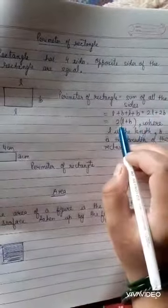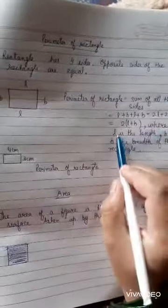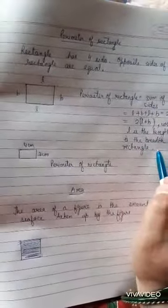So we will take 2 as a common. So 2(L plus B), where L is the length and B is the breadth of the rectangle.